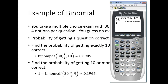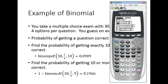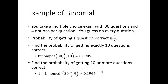On the calculator: enter 1 minus, then second, distributions, select binomCDF. Enter 30 trials, 1/4 probability of success, up to 9 successes. The result is 0.1965..., rounding to 0.1966 — about a 20% chance of getting 10 or more correct by just guessing.